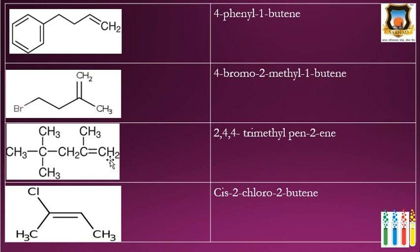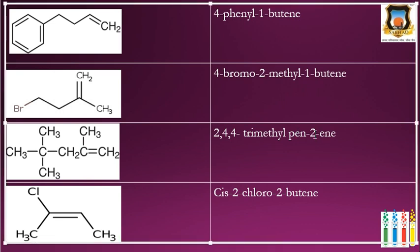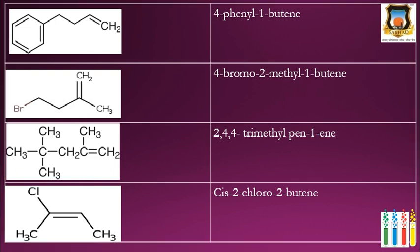In the next example with a five-carbon chain (1-pentene), there are CH₃ groups at the 2nd and 4th carbons (two methyl groups at C4), giving the name 2,4,4-trimethyl-1-pentene.